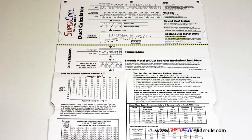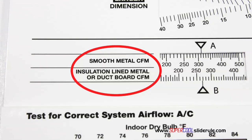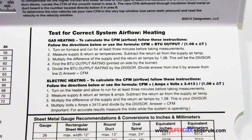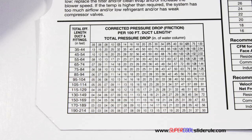Inside is packed with even more information. It performs sizing of both metal and flexible duct. It has the only direct reading conversion from smooth metal to insulation-lined metal we've ever seen. The majority of technicians have never been taught that if the insulation is on the inside of the ductwork, you cannot size it with a regular duct calculator. It has step-by-step directions for determining airflow through a gas furnace, electric furnace, or an air conditioning unit. It has pressure drop multipliers for ductwork as well as recommended velocities.